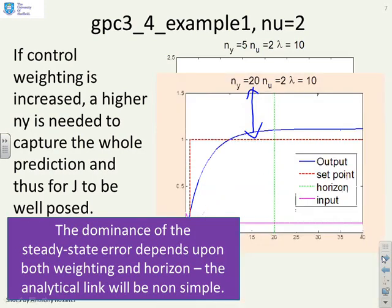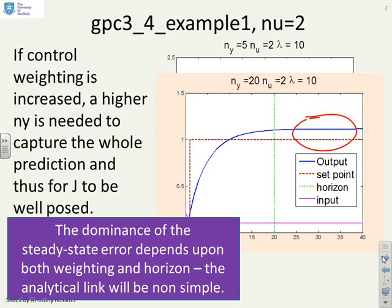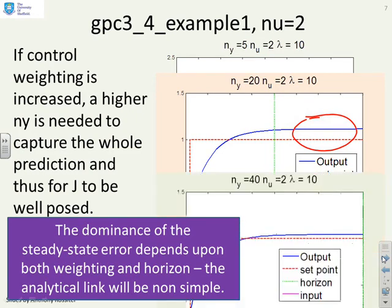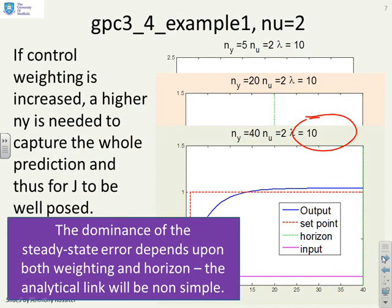You won't get a smooth analytical link. So you'll see here, even with ny equal to 20, which on the previous slide the predictions were very good, now there's still quite a large steady state error. And so you cannot treat the weighting in isolation from the horizons or vice versa. In this particular case, even going up to 40, you see we've not eliminated the steady state error altogether.